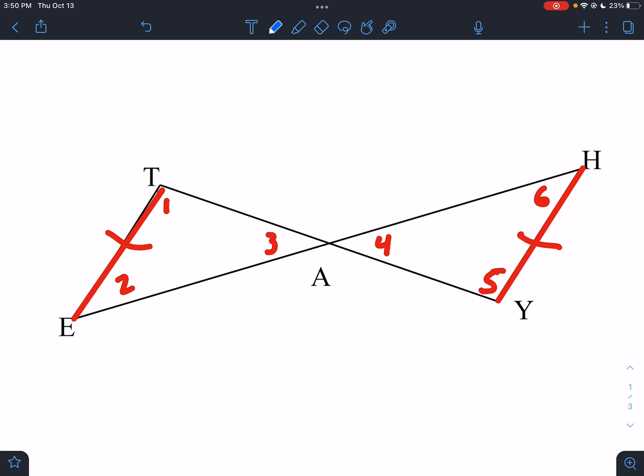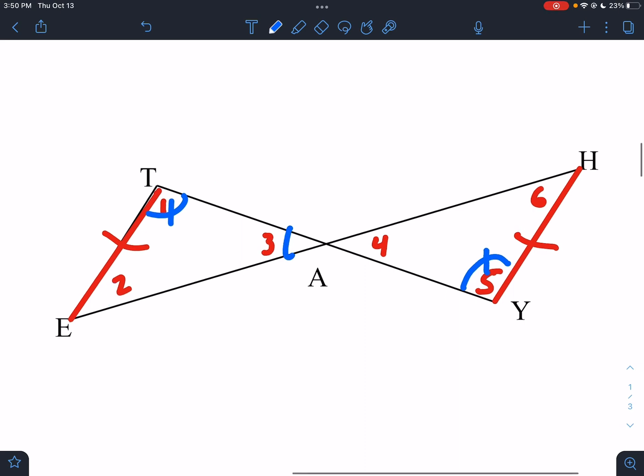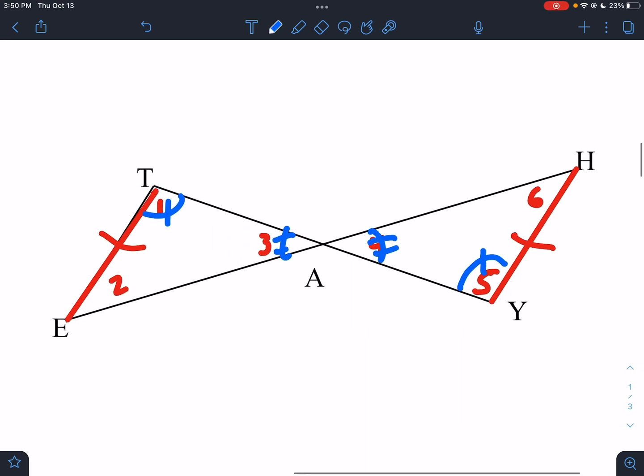So one possible choice here is to say one and five are congruent. To say two and six are congruent. And we would have angle, side, angle. Two angles and the included side. That's one choice. Another thing we could do is we could use the vertical angles. And that's what probably most of you saw right away. But we do have to use at least one set of alternate interior angles. But if we use the vertical angles, we're going to have angle, angle, non-included side. So it does change our answer. And both ways are fine. But your proof needs to follow.